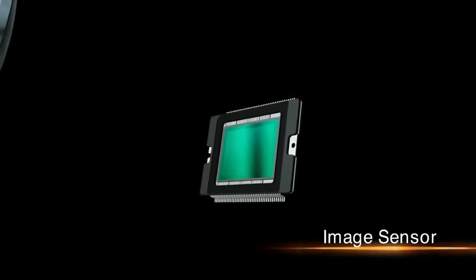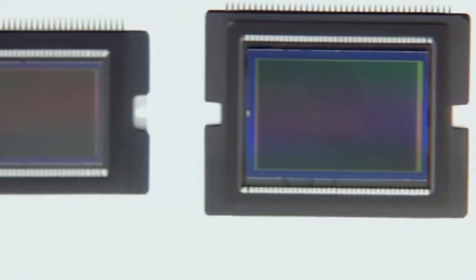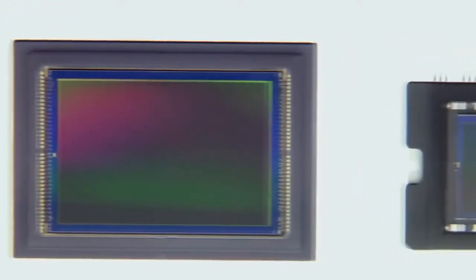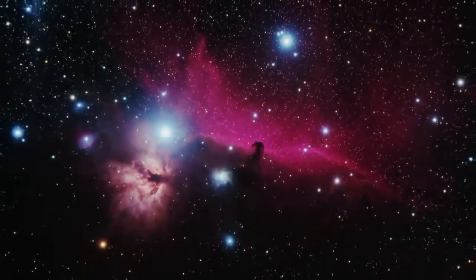The image sensor converts light entering through the lens into electrical signals. Canon applies its original technologies and know-how to develop high-precision image sensors that offer high-speed processing and low-power consumption. Each pixel stores tens of thousands of electrons. This has made possible a digital revolution in astrophotography.